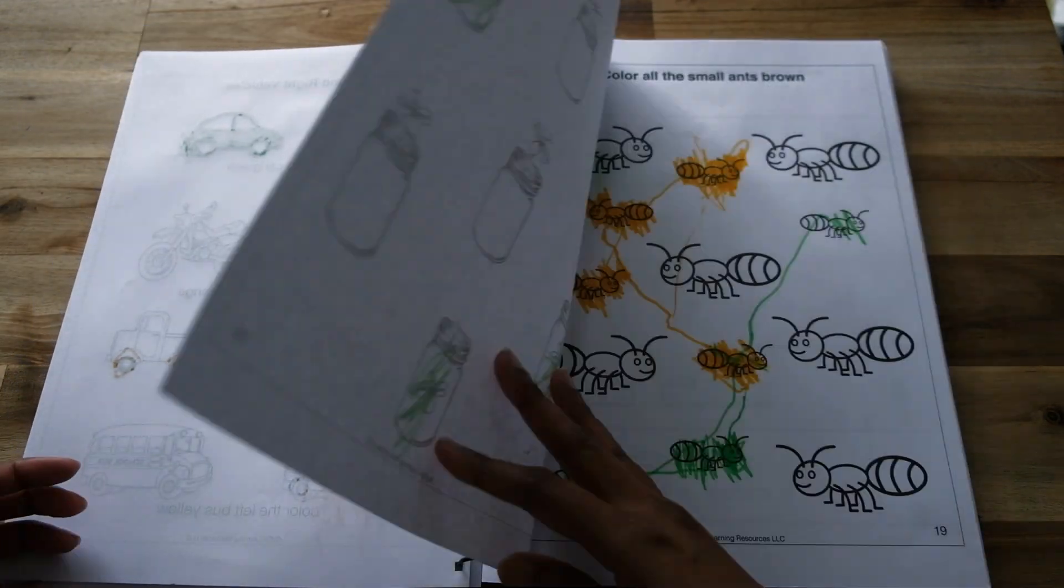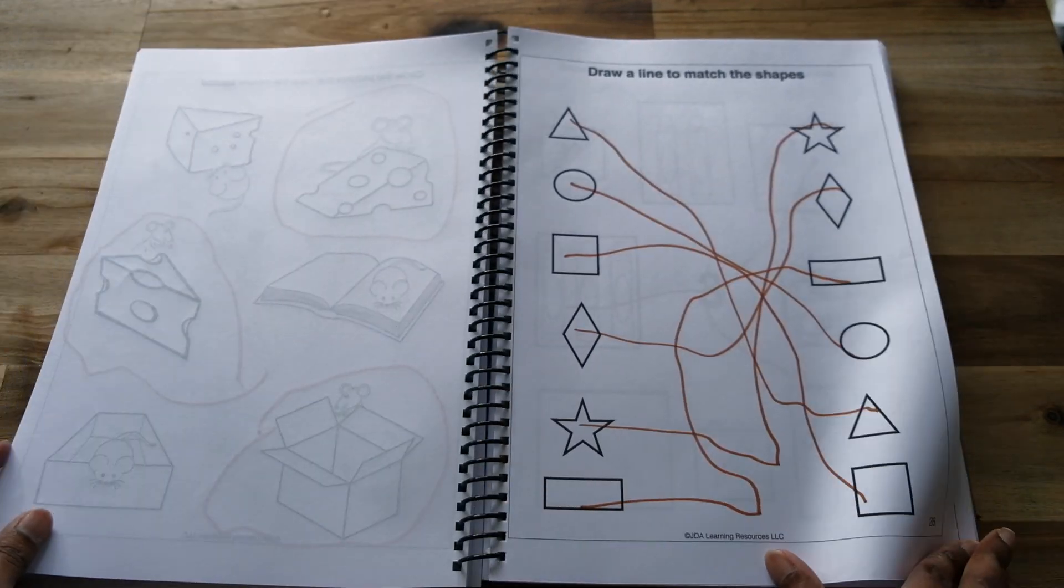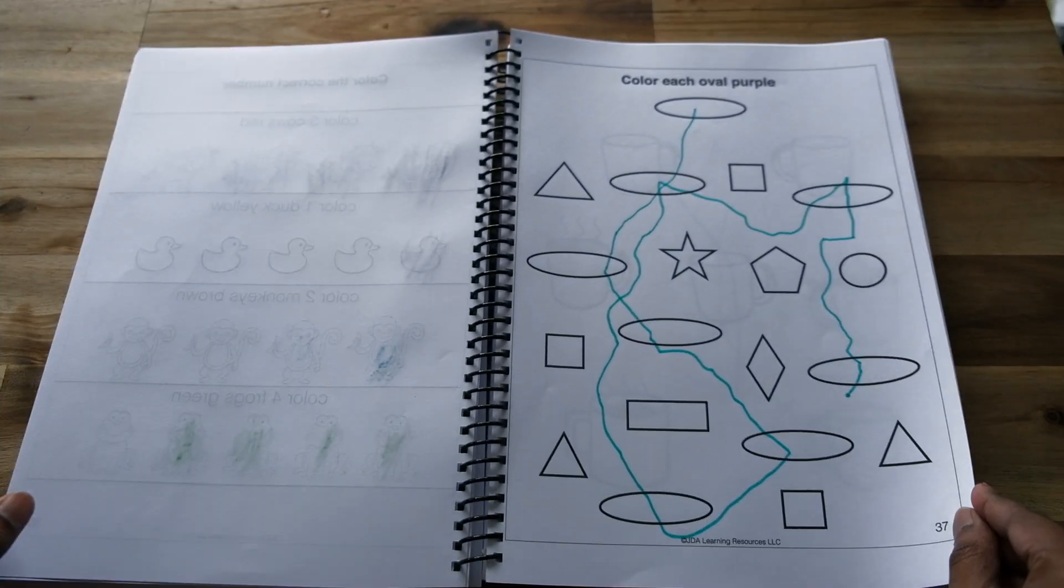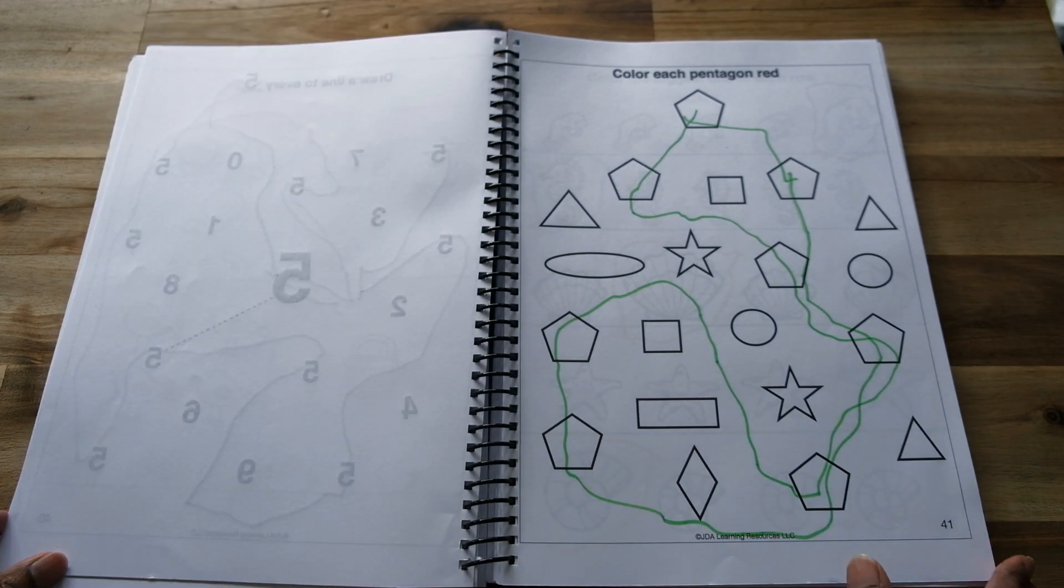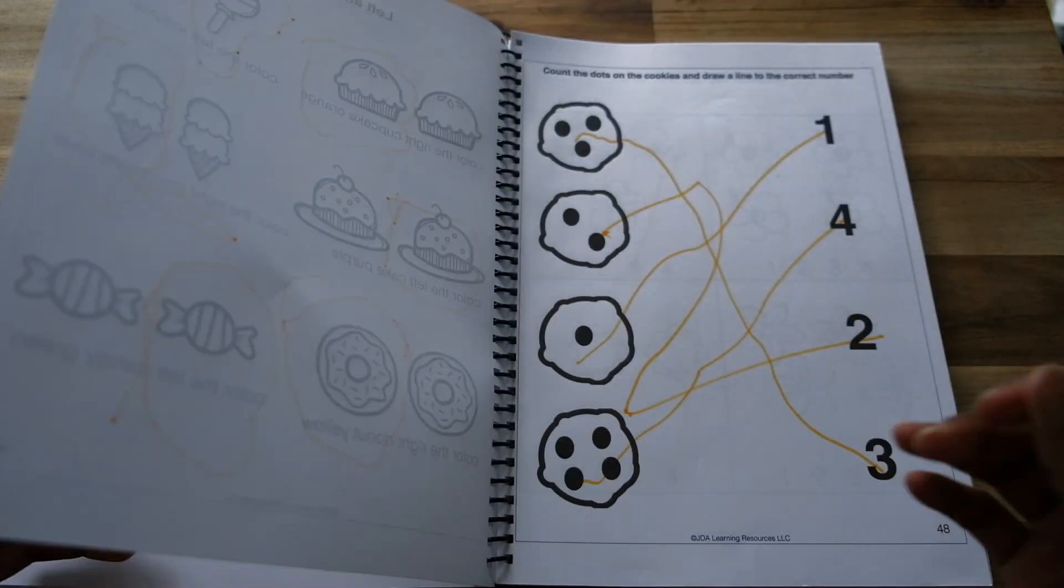You can buy this either as a PDF or as a hard copy. I just ended up getting the downloadable PDF and then printing it and binding it myself. It's great for early learners because none of the activities actually require writing.